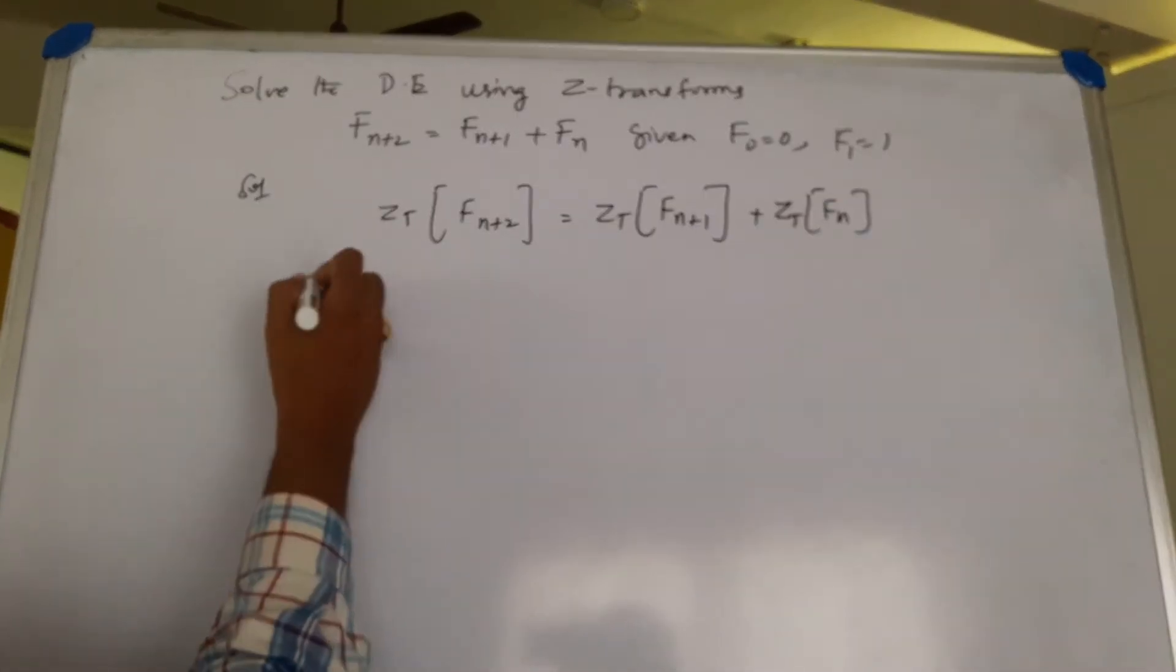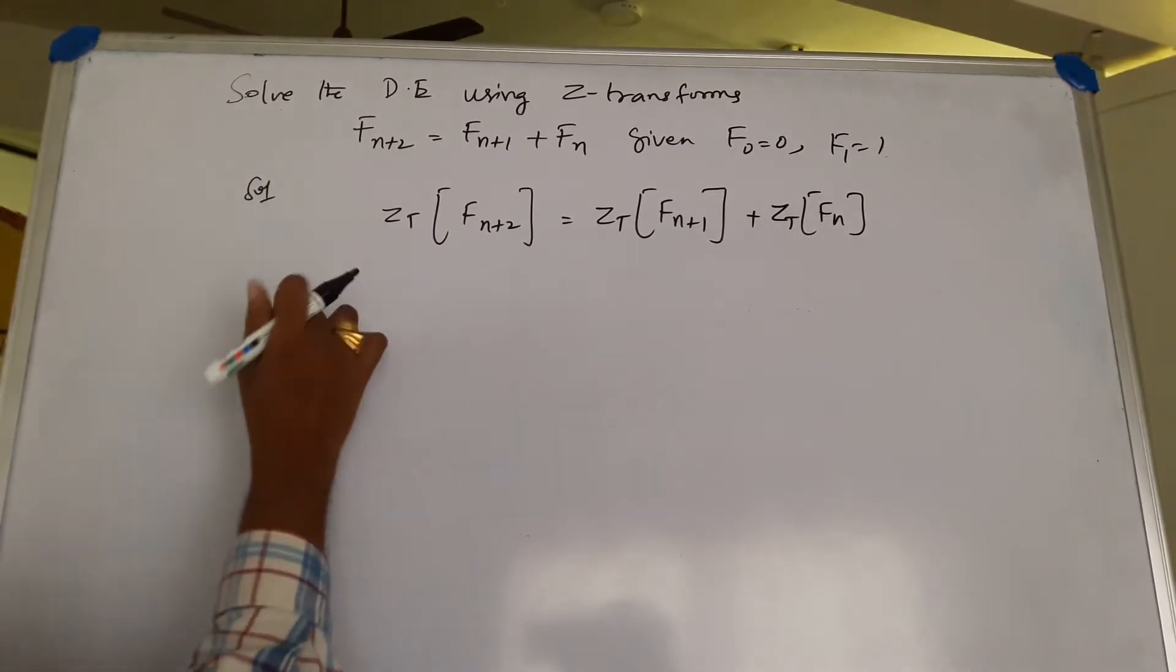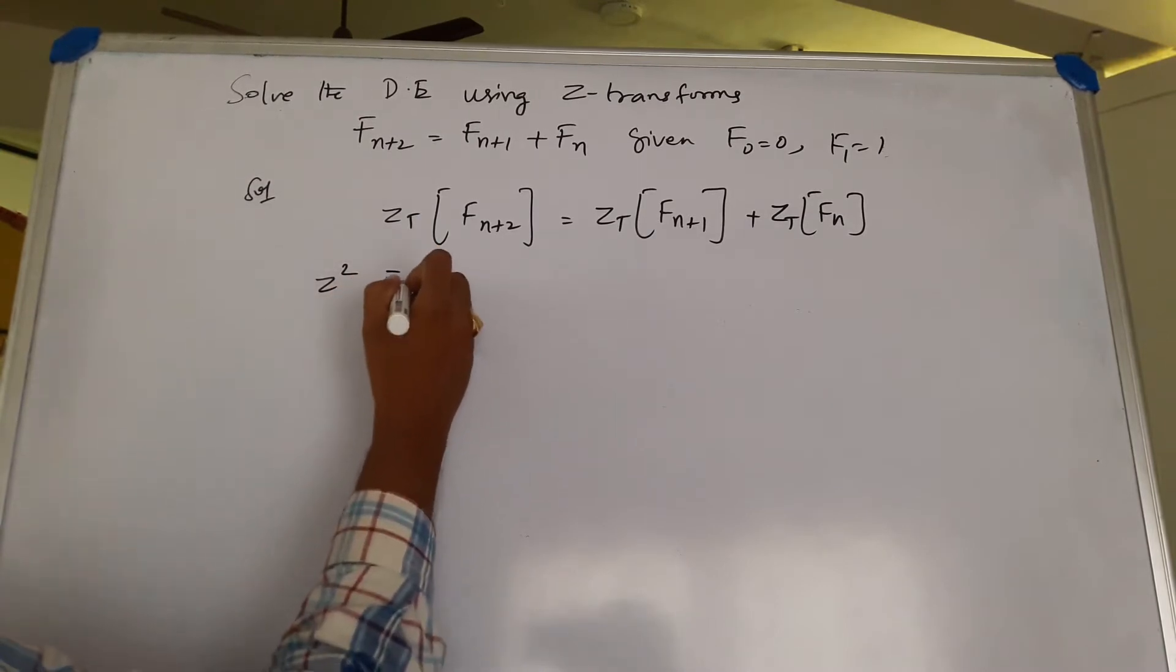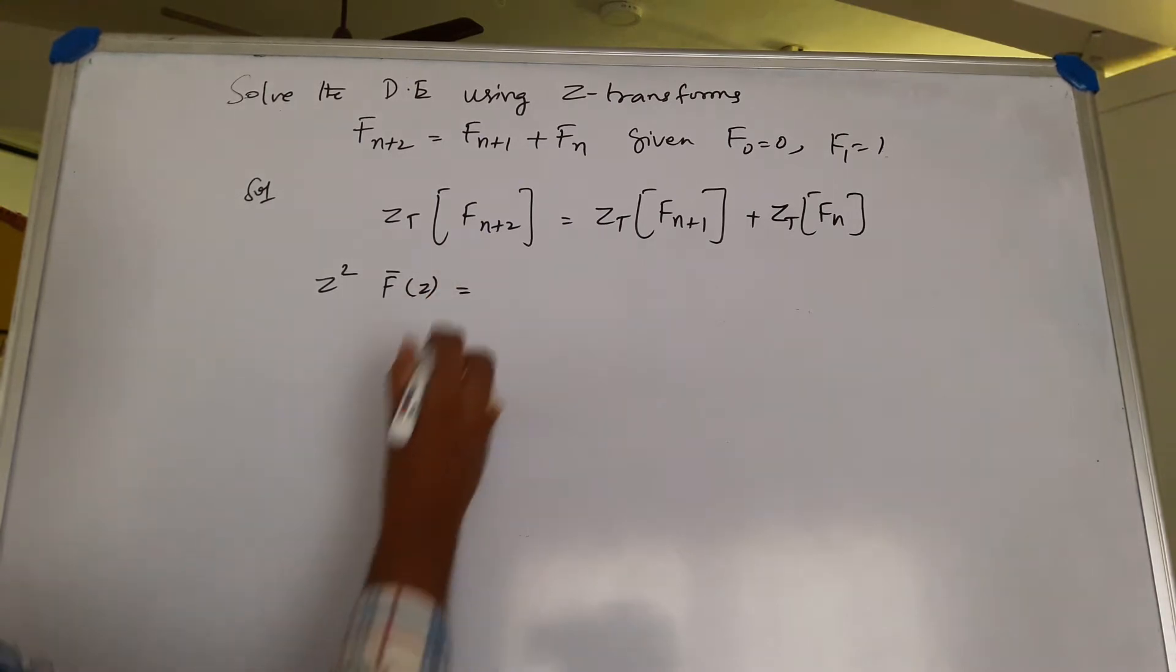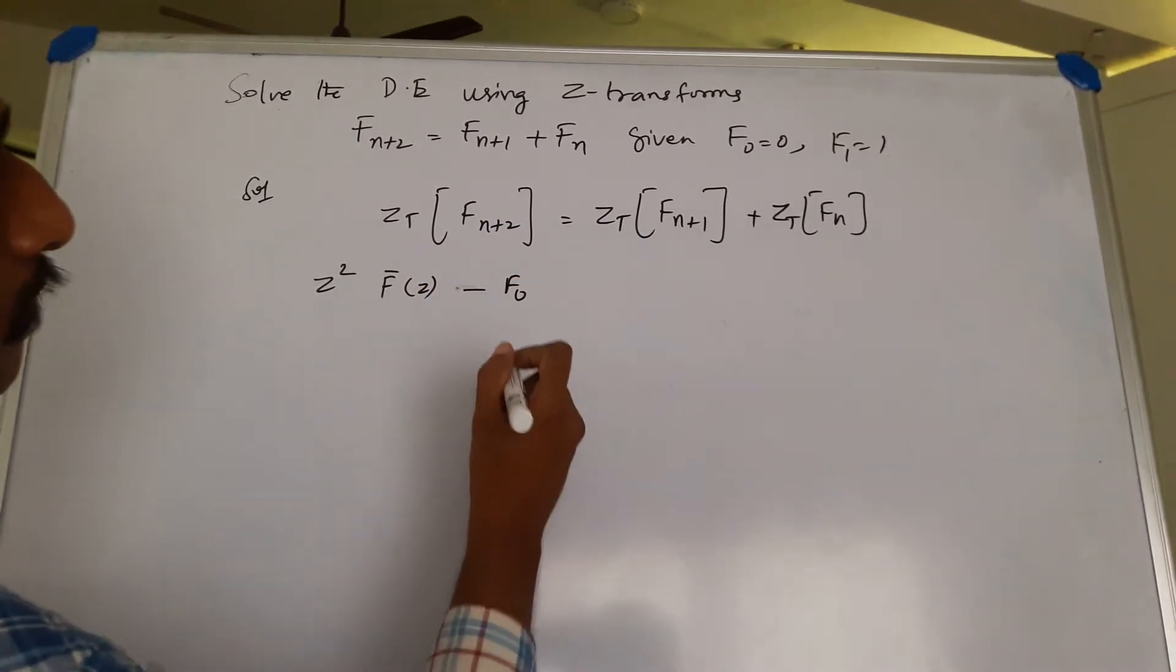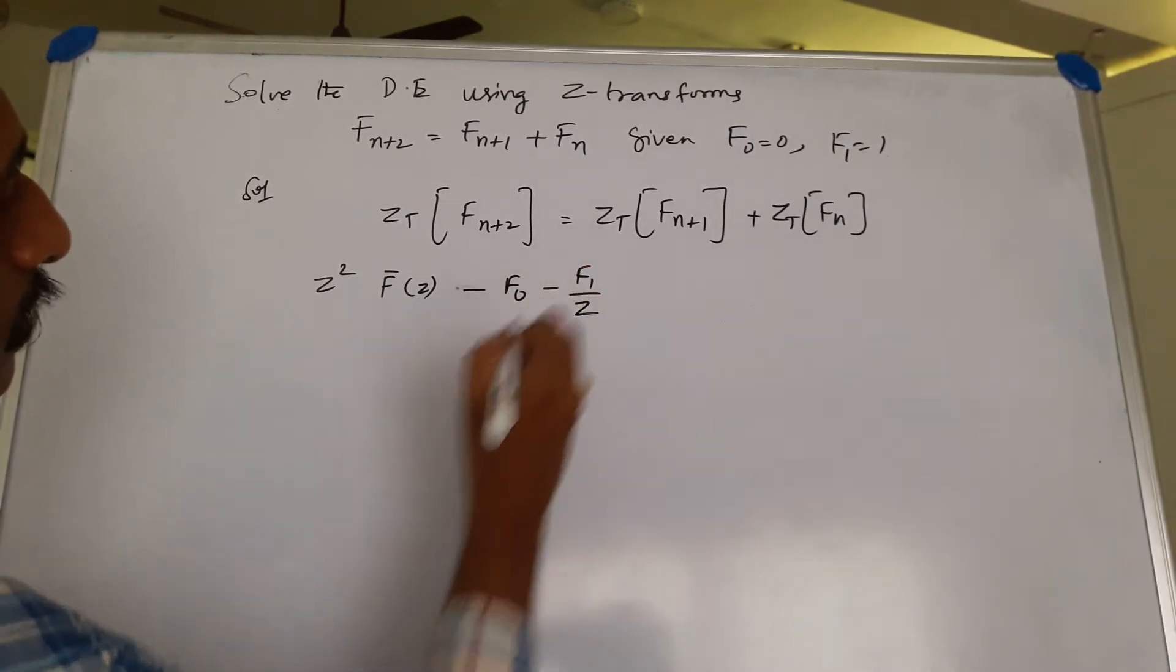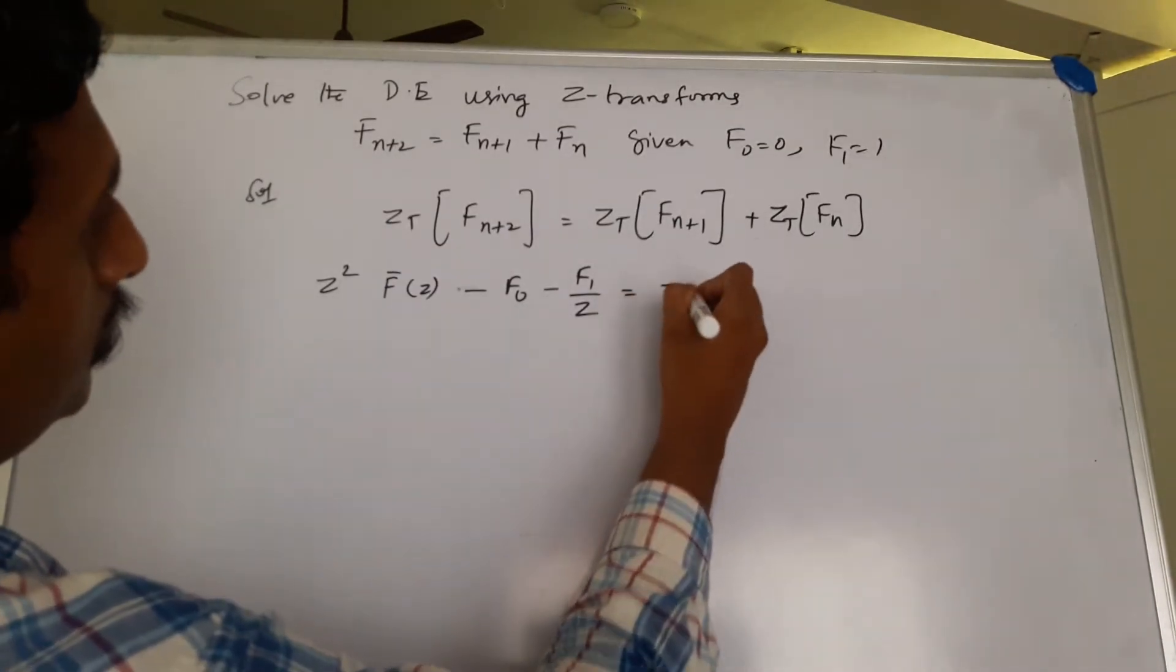Now this is z², F̄(z) minus f₀ minus f₁/z, and this is z F̄(z) minus f₀.